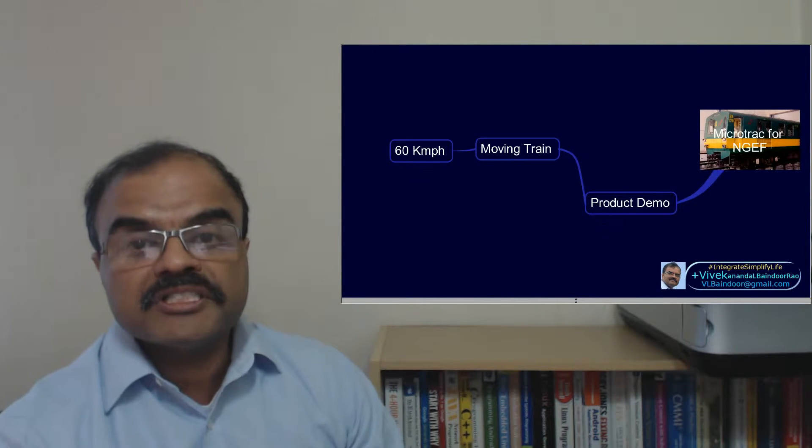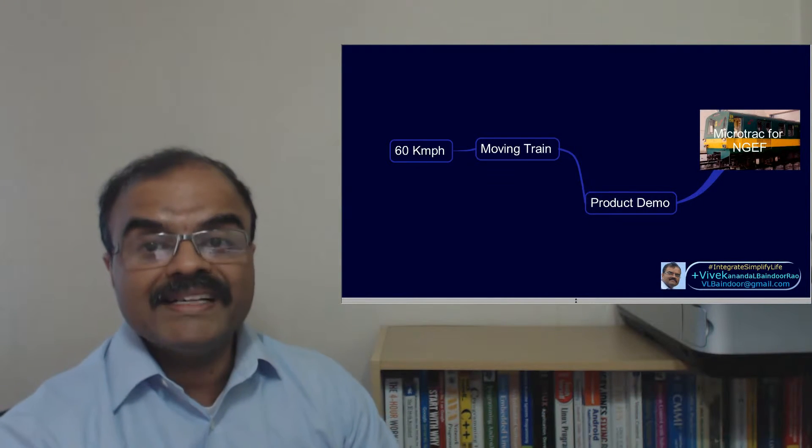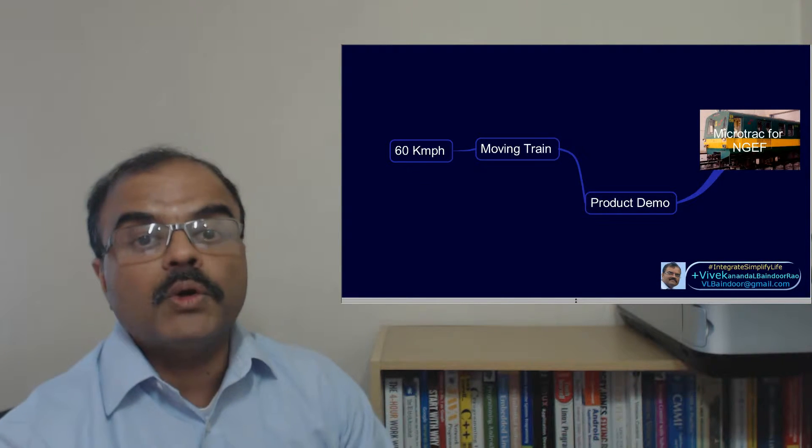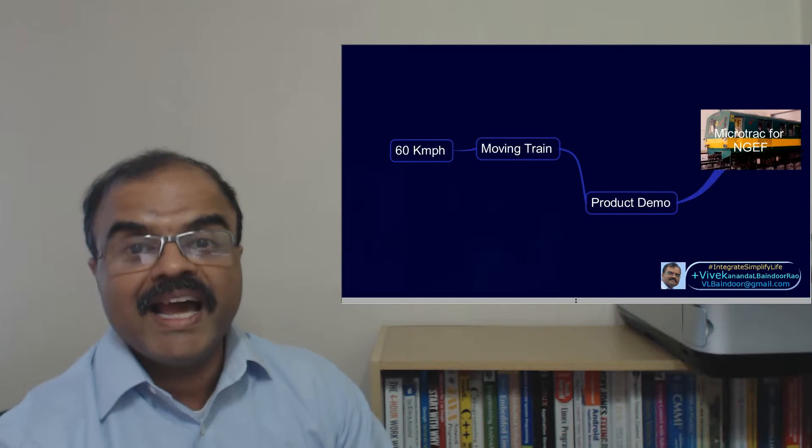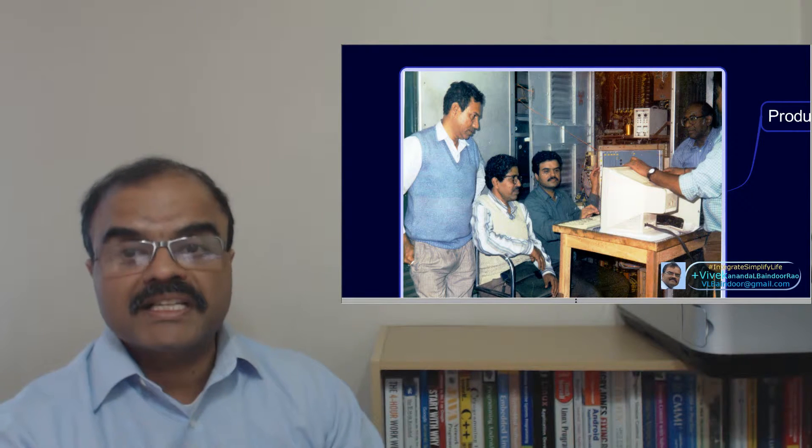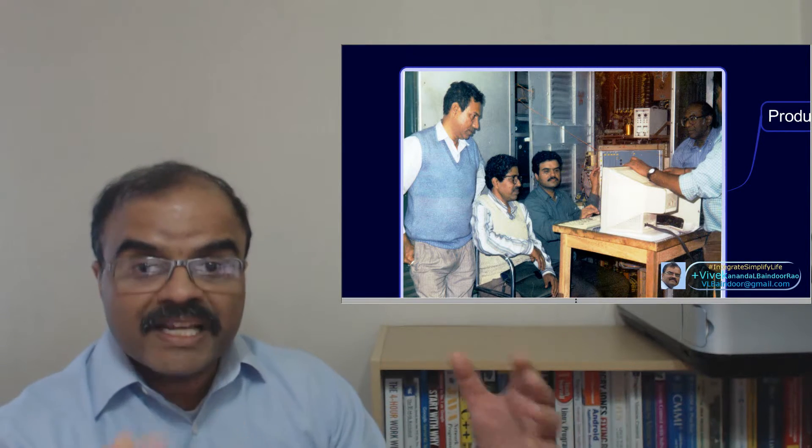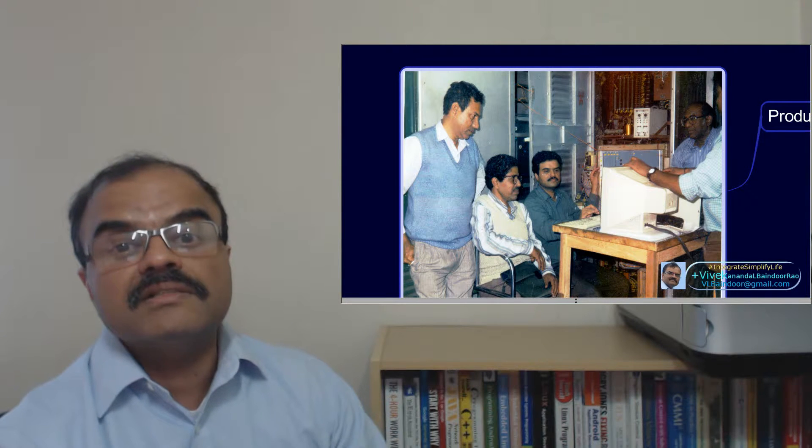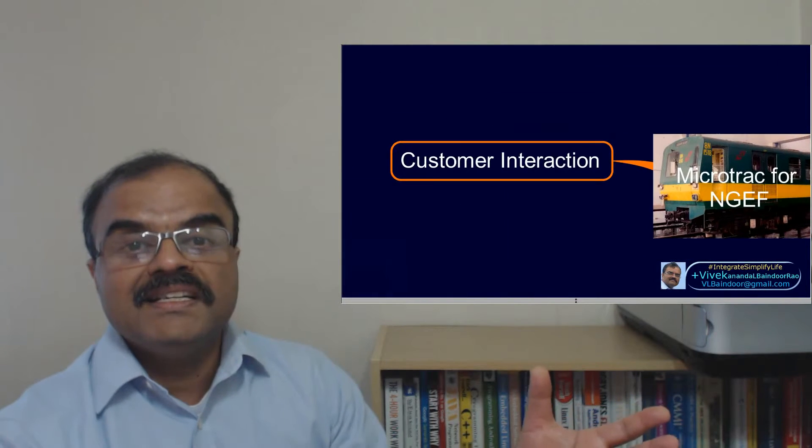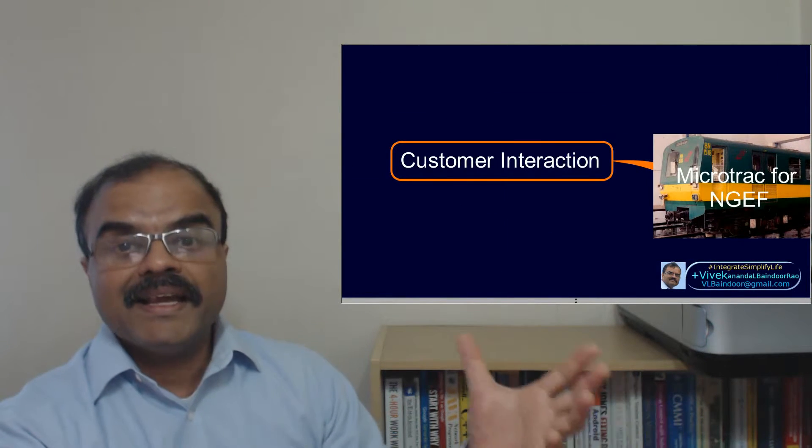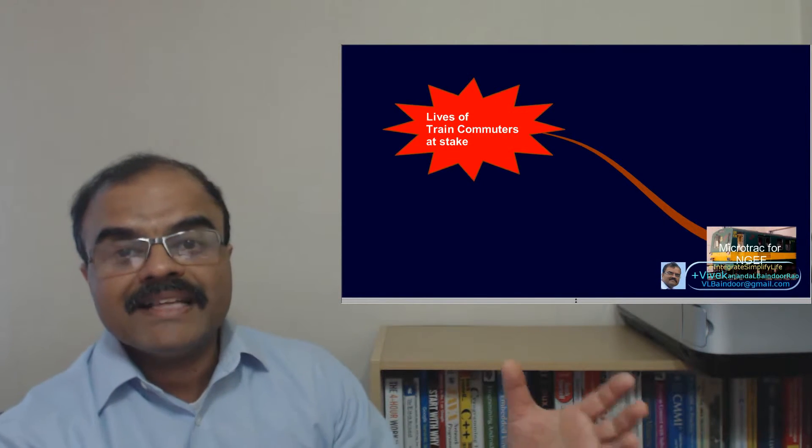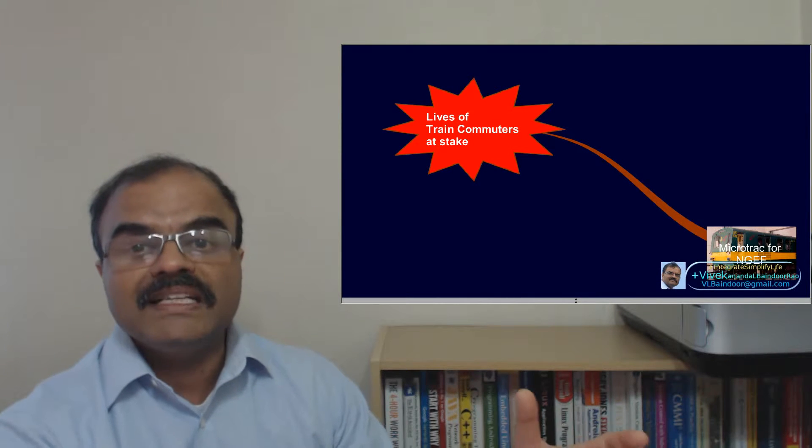I ran the diagnostic system in a moving train, moving at 60 kilometers per hour under the control of microtrack and showed the live meters and charts on computer screen to metro officials, explained to them various stages of train movement and related to their own knowledge of the train. This was a very exciting project because all the lives of the passengers of the train were in the hands of the program running on the PLC.